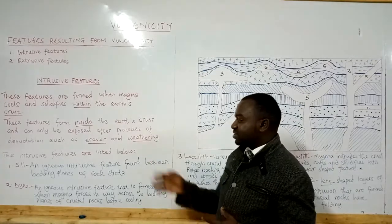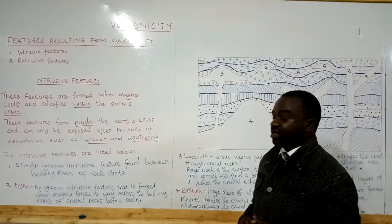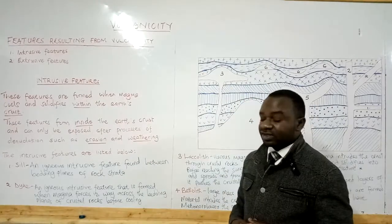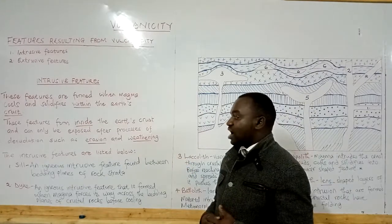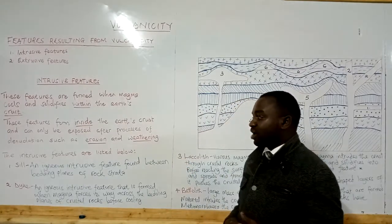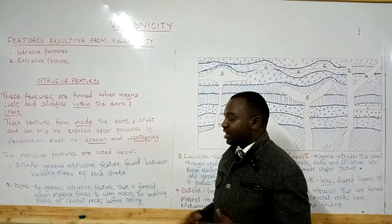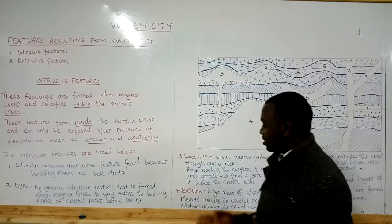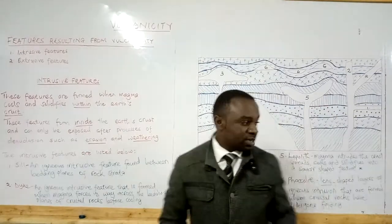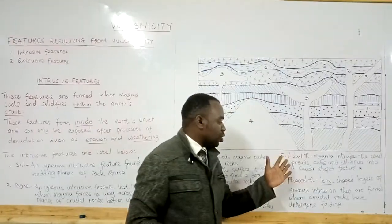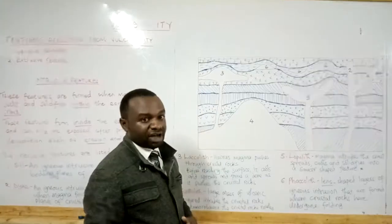I have listed some intrusive features that we are going to discuss today. On the whiteboard we have: sill, dike, laccolith, batholith, lopolith, and phacolith.